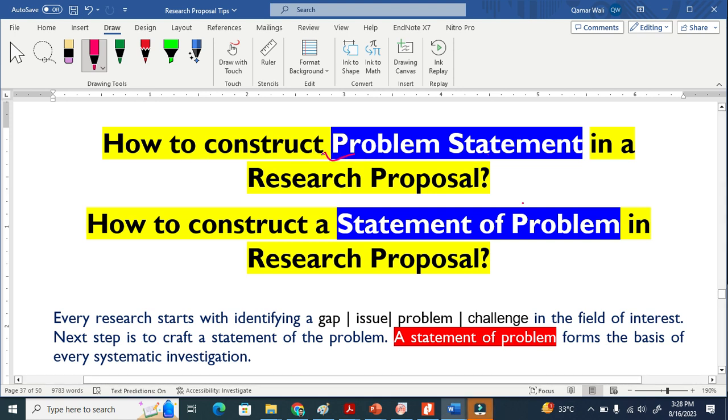How to construct problem statement in a research proposal. This is also called statement of problem. Once you identify the problem in your research, in your study, then you basically craft a statement about that problem. This is why it is called problem statement or statement of problem.